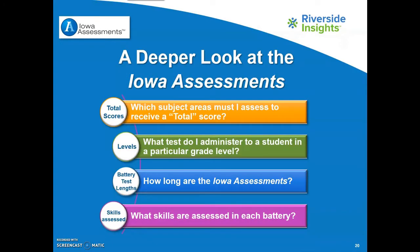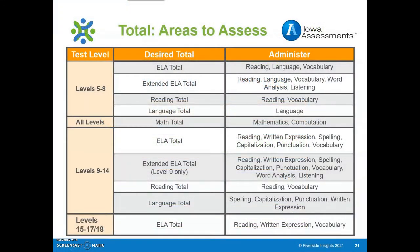Here are the four questions that will be addressed in this video. This chart shows which assessments are needed for administration in order to obtain the needed or desired total scores for complete or composite. Notice that at all levels, students must take both the math and computation assessments to achieve a math total score.